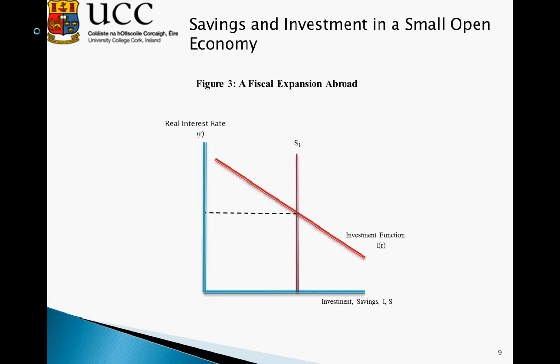Looking at this graphically, we consider a fiscal expansion abroad and begin in equilibrium. S intersects I and the world interest rate r* happens to coincide with this equilibrium. We then see an increase in the world interest rate caused by fiscal policy abroad.